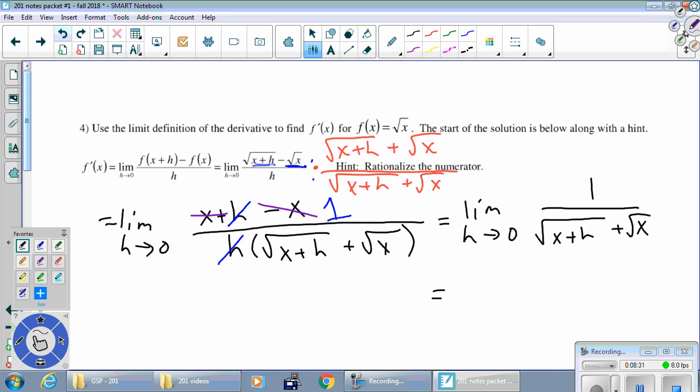But now, we're not going to be sad, because we can put h equals zero in. Don't write the limit anymore. Just change all of the h's to zeros. And so we get one over root x plus root x, which is one over two root x.